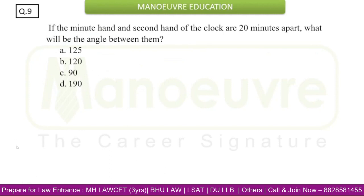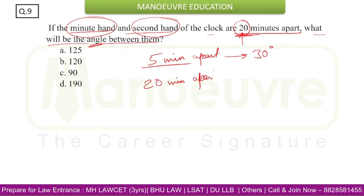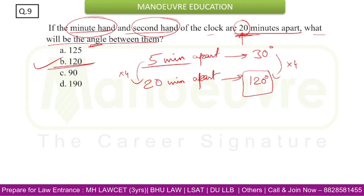This question is based on clocks: If the minute hand and hour hand of a clock are 20 minutes apart, what is the angle between them? We know that when both hands are 5 minutes apart, the angle is 30 degrees. Since 20 minutes = 5 × 4, the angle is 30 × 4 = 120 degrees. Option B, 120 degrees, is the answer.